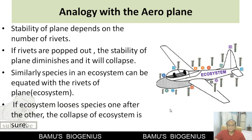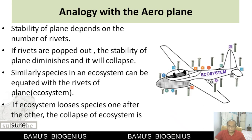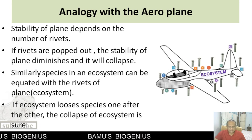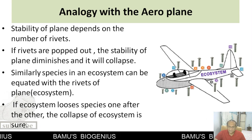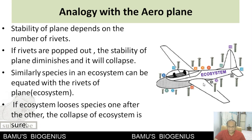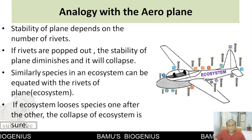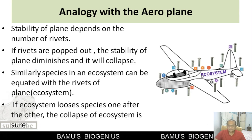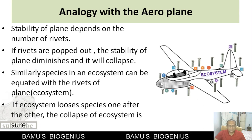In this analogy, the aeroplane represents the ecosystem and species represent the rivets of that aeroplane. Just as rivets are very important for joining different parts of the plane, the stability of the plane depends on these rivets. If rivets are popped out or removed, the stability of the aeroplane will be affected and it will not be able to fly. Similarly, in an ecosystem, species are like rivets — if species are removed gradually, that ecosystem will collapse. This is known as the Rivet Popper Hypothesis, given by Paul Ehrlich.